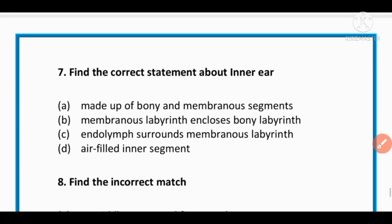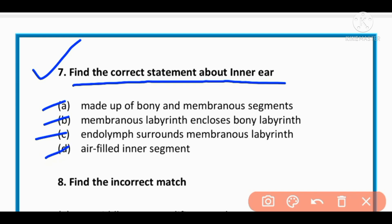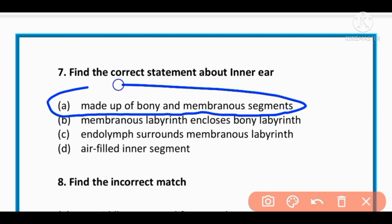MCQ number 7: Find the correct statement about inner ear. Made up of bony and membranous segments, membranous labyrinth encloses bony labyrinth, endolymph surrounds membranous labyrinth, or air-filled inner segment. The correct option is A: made up of bony and membranous segments.